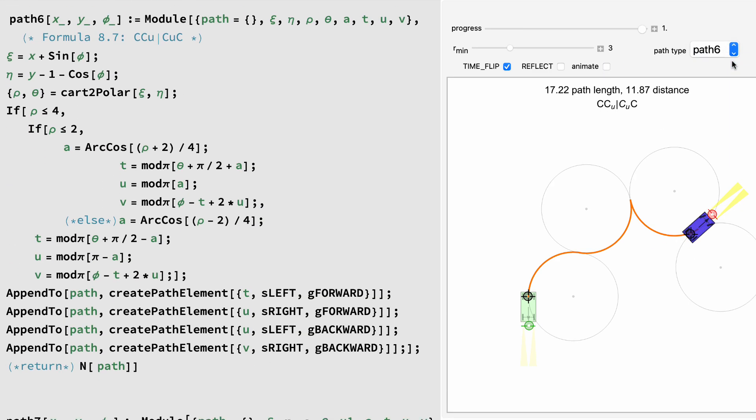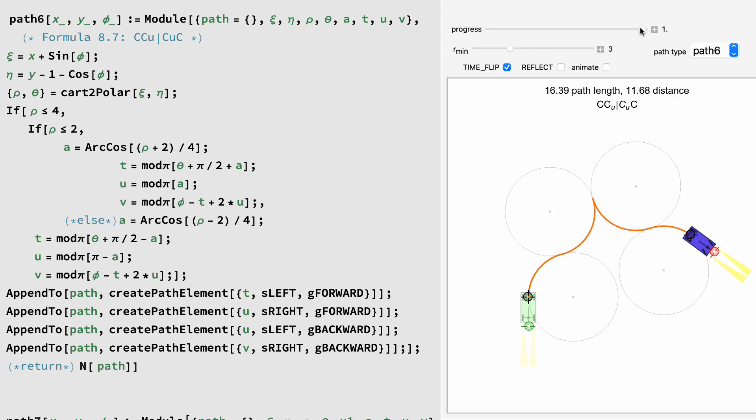Path 6 is two curves in opposite directions, a gear shift, followed by two curves in opposite directions. Note that the second and third curves have the same values, here called Cu. Here is a Cartesian to polar conversion, and the trig.